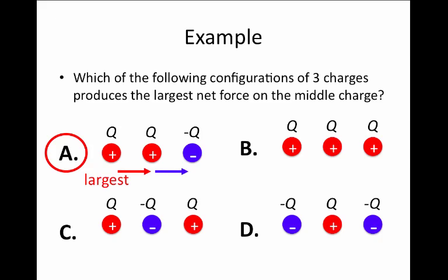In case B, the left charge exerts a repulsive force pushing the middle charge to the right, while the right-hand charge also exerts a repulsive force trying to push it to the left. The net force in this case is zero because these two charges, being equidistant, produce forces of equal magnitude but in opposite directions, so the net force cancels to zero.